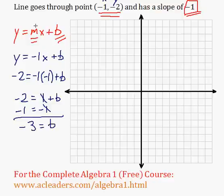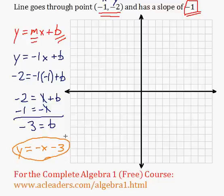That's it. Now we already have m, we have b. So we have our line. The equation of the line is just y = -1x or just -x plus b, which is -3. So -x - 3. That's it. That's the equation of our line.